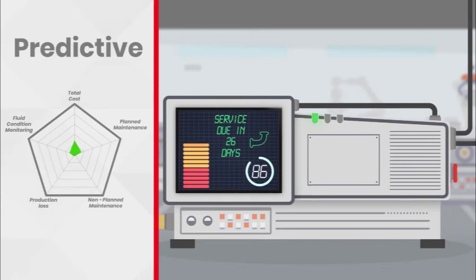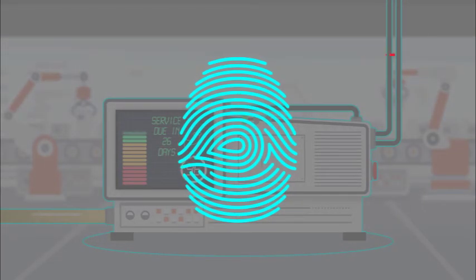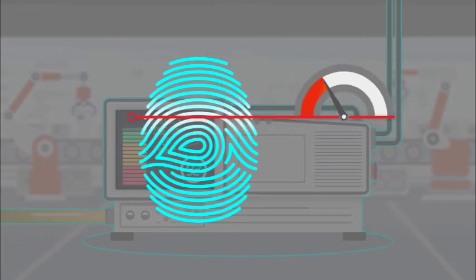To allow for a predictive maintenance strategy, monitoring the condition of the operating fluid is of major significance. The condition of the operating fluid is comparable to a fingerprint of the overall condition of the system.